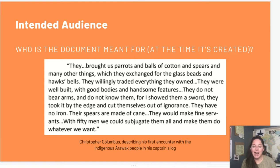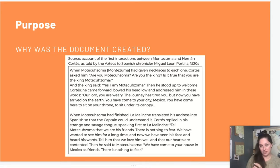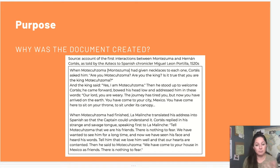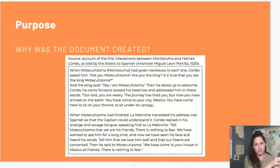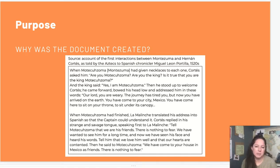Purpose is the one that students miss the most — they just get it wrong. My tip is to typically encourage students to do purpose with the intended audience or purpose with point of view, because doing purpose on its own is often kind of difficult. Here's a document where we could talk about that: this is an account of the first meeting between Montezuma and Hernan Cortes, but it's told by the Aztecs to a Spanish historian who's writing it down in the 1520s. This is really a tertiary account — Aztecs remembering their recollections of this event and telling it to a Spanish person who's writing it down at least a few years after the conquest actually happened. And that's important. This document is really interesting because there are different layers of purpose.